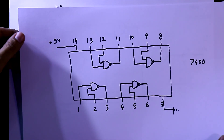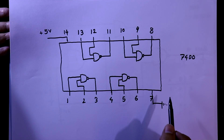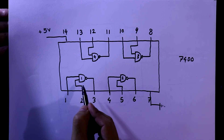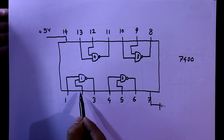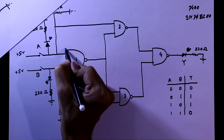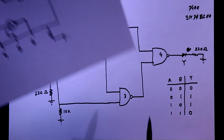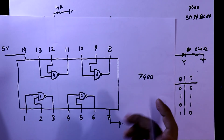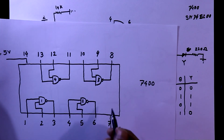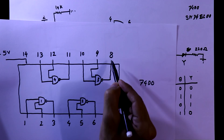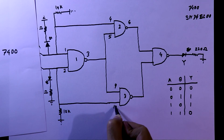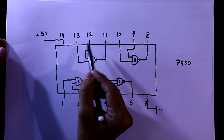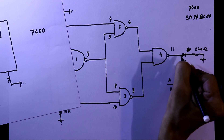Pin 7 connects to ground and pin 14 to +5V. Gate 1: inputs are pins 1 and 2, output is pin 3. Gate 2: inputs are pins 4 and 5, output is pin 6. Gate 3: inputs are pins 9 and 10, output is pin 8. Gate 4: inputs are pins 12 and 13, output is pin 11. The XOR output comes from pin 11.